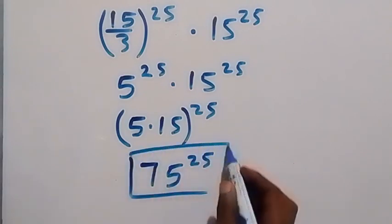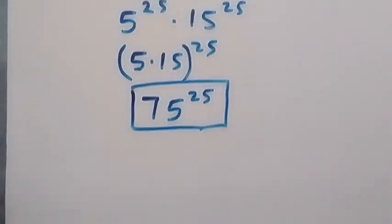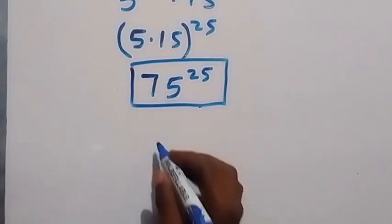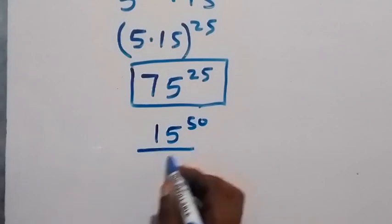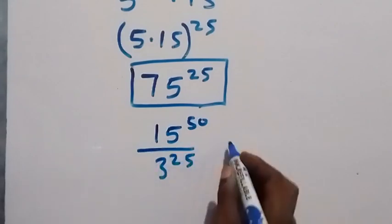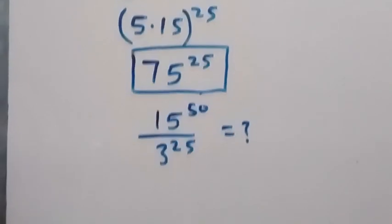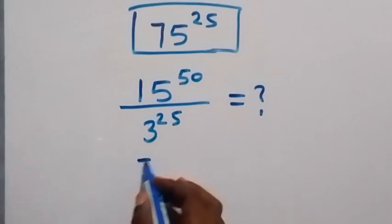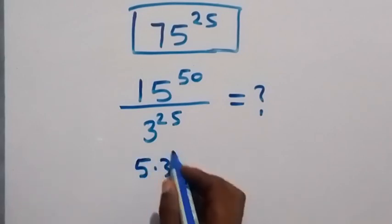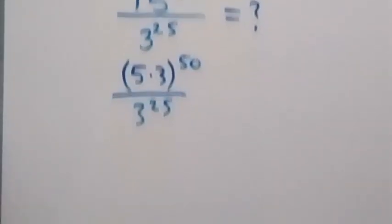We can also use another way to solve this. We have 15 raised to power 50 divided by 3 raised to power 25. From here we can rewrite this again as 5 times 3 raised to power 50, then divided by 3 raised to power 25.